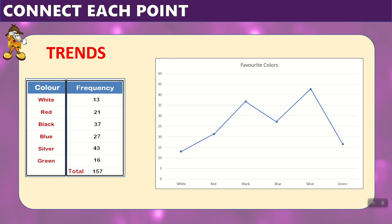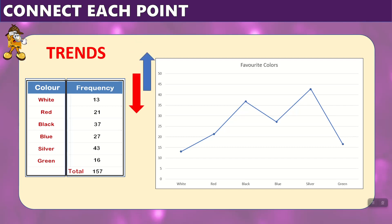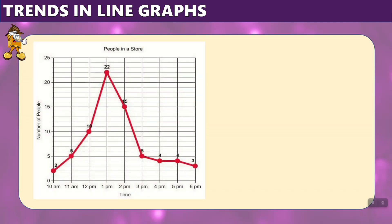As we said before, line graphs help us to notice trends. Trends sometimes show us an upward direction or a downward direction, and this helps us to understand more what's happening in the graph. If we look at this graph of people in a store between 10am and 6pm, we can see something trending up and trending down depending on what time of the day it is.